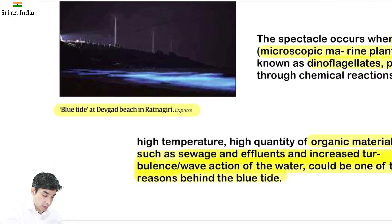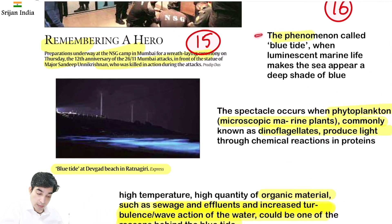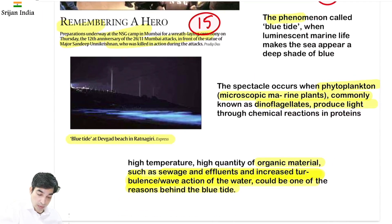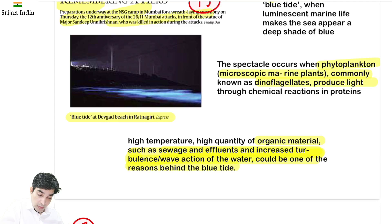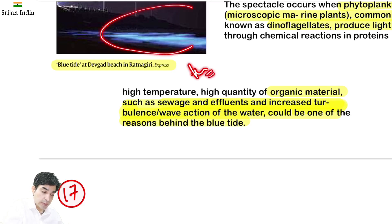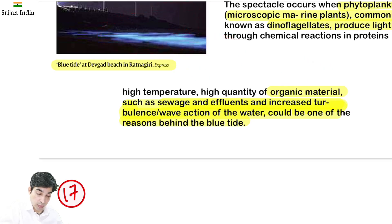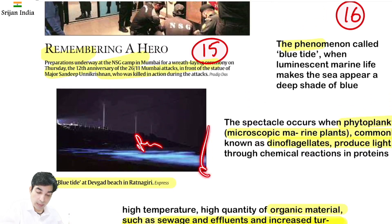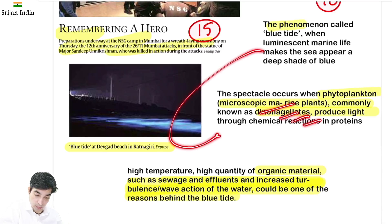Blue Tide phenomenon recently witnessed in Ratnagiri. A beach wahan poora blue ho gaya tha. Reason: bioluminescence — jaise jugnu mein luminescence hota hai, aise hi marine life mein hua. Yeh phenomenon phytoplankton se hua, specifically dinoflagellates — jo microscopic marine plants hain. Ye light produce karte hain via chemical reaction in their proteins. Light pollution ki wajah se usually yeh cheezein visible nahi ho paatein. But high sea surface temperature, high quantity of organic material — sewage, effluents — se turbulence barhti hai aur blue tide phenomenon dikhne ko milta hai.